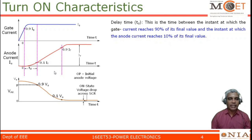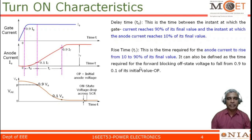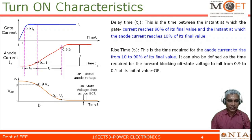Rise time TR is defined as the time required for the anode current to rise from 10 percent to 90 percent of its final value. It is also defined as the time required for the forward blocking off-state voltage to fall from 90 percent to 10 percent of its initial value — both definitions refer to the same time interval.